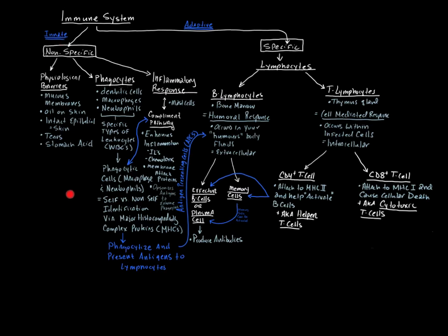That's our nonspecific response, a general reaction that happens whenever there's an injury or infection. The specific response or adaptive response primarily involves lymphocytes. Lymphocytes come in two general flavors: your B lymphocytes and your T lymphocytes. B lymphocytes mature in the bone marrow, whereas T lymphocytes mature in the thymus gland.